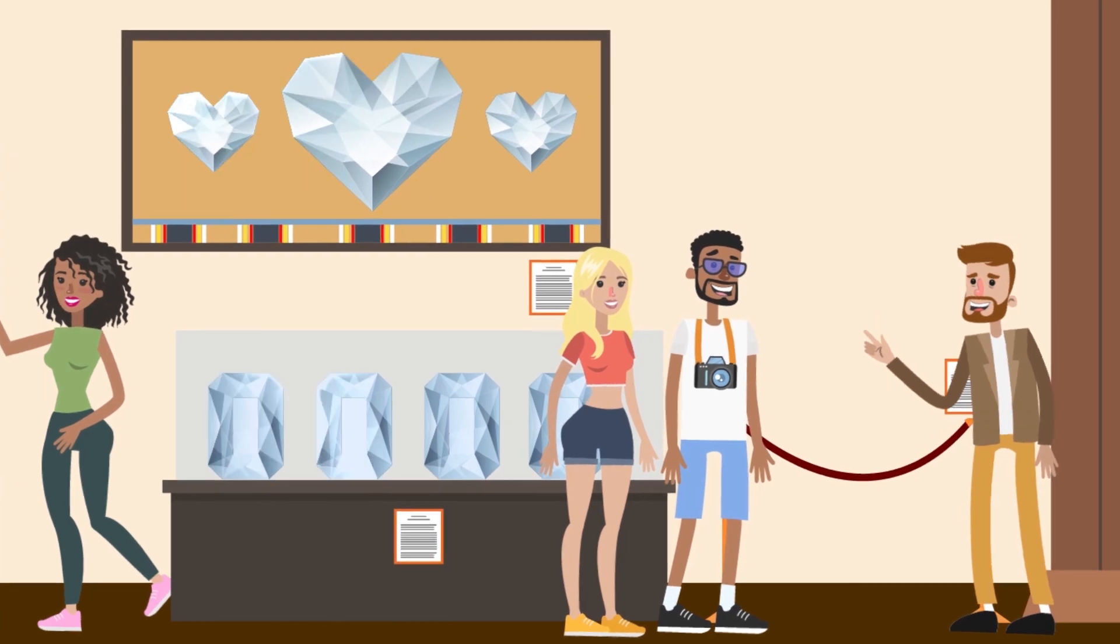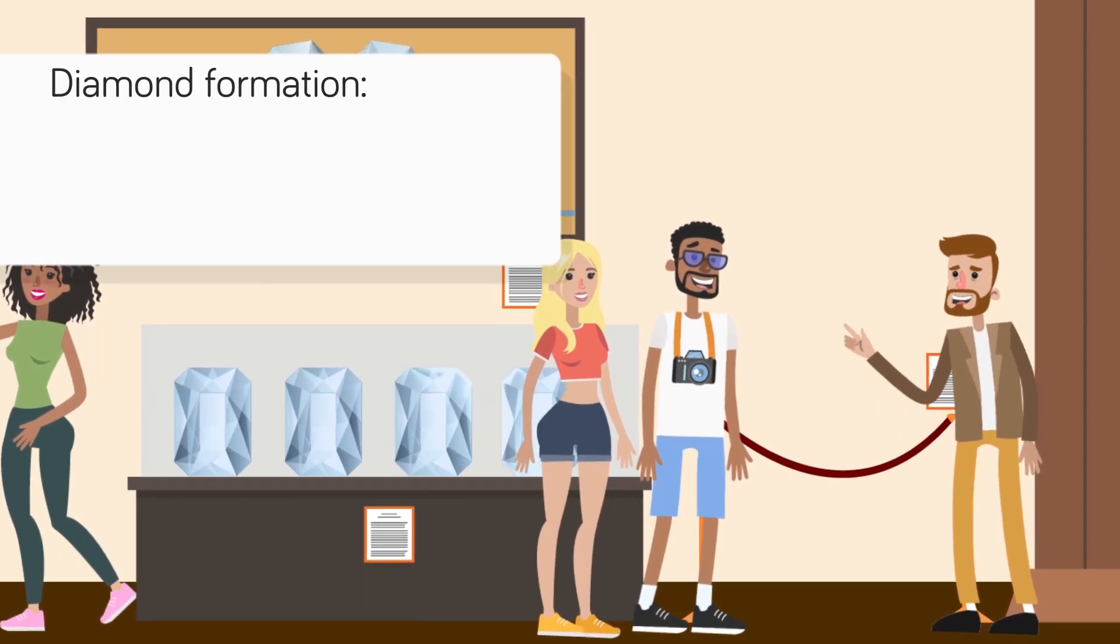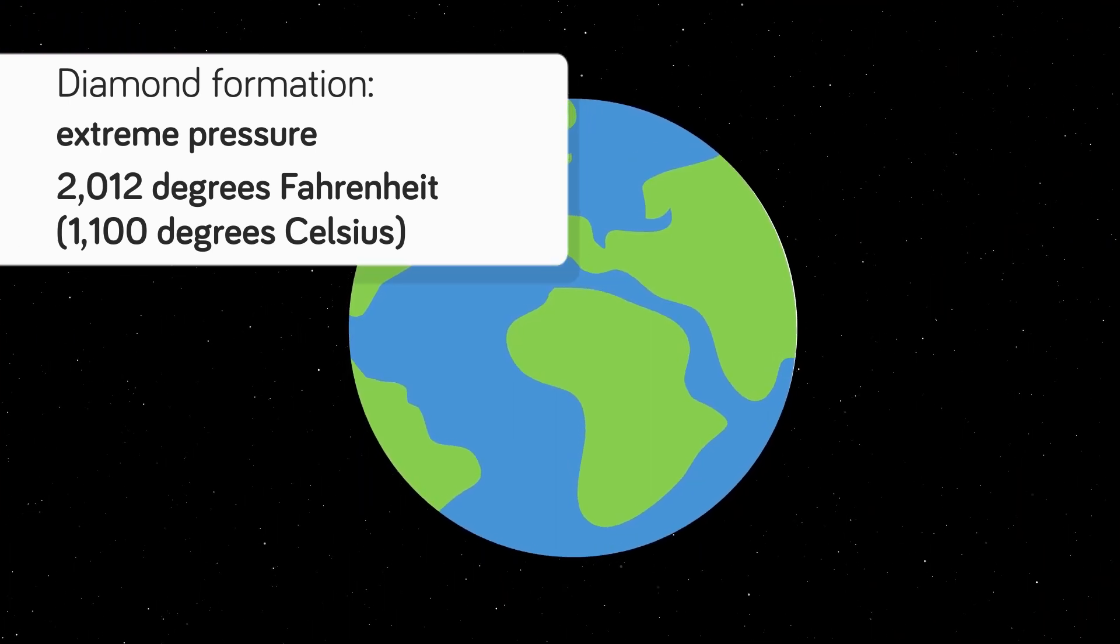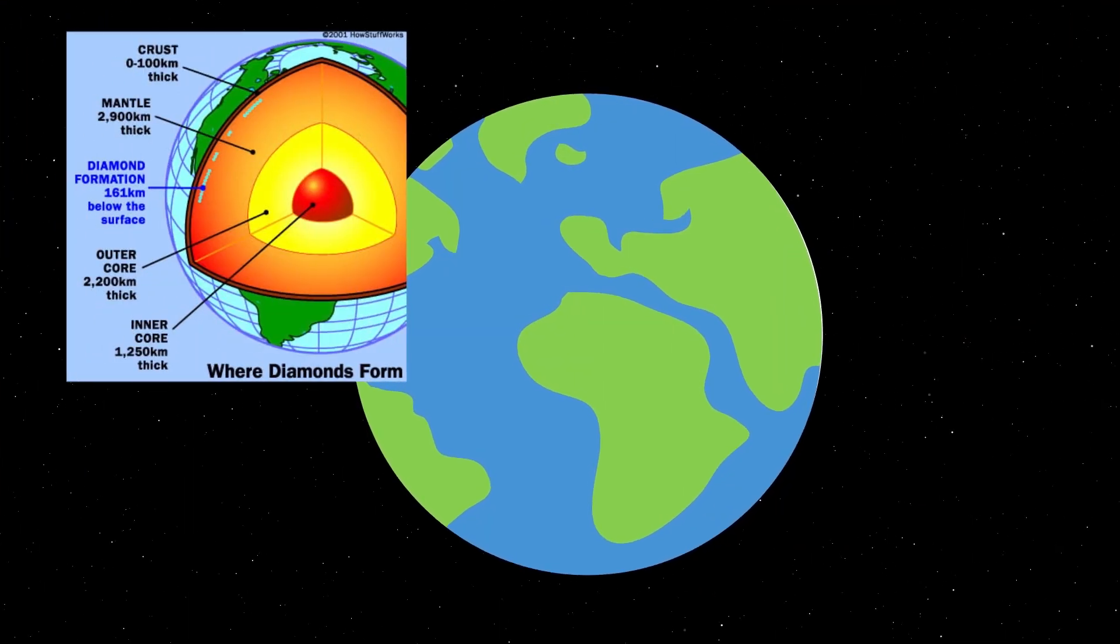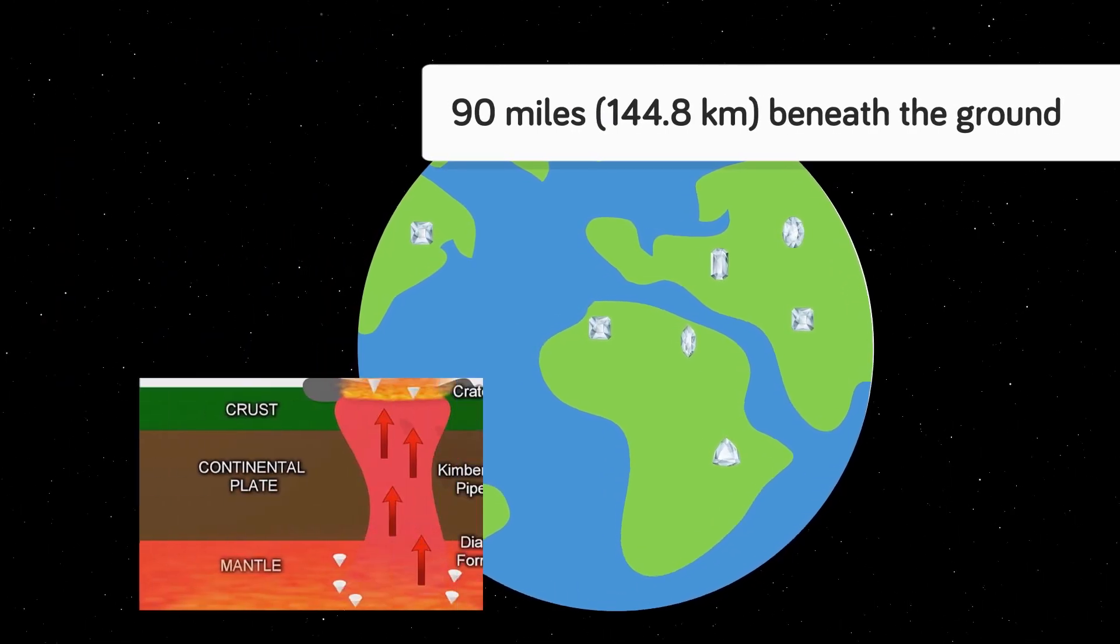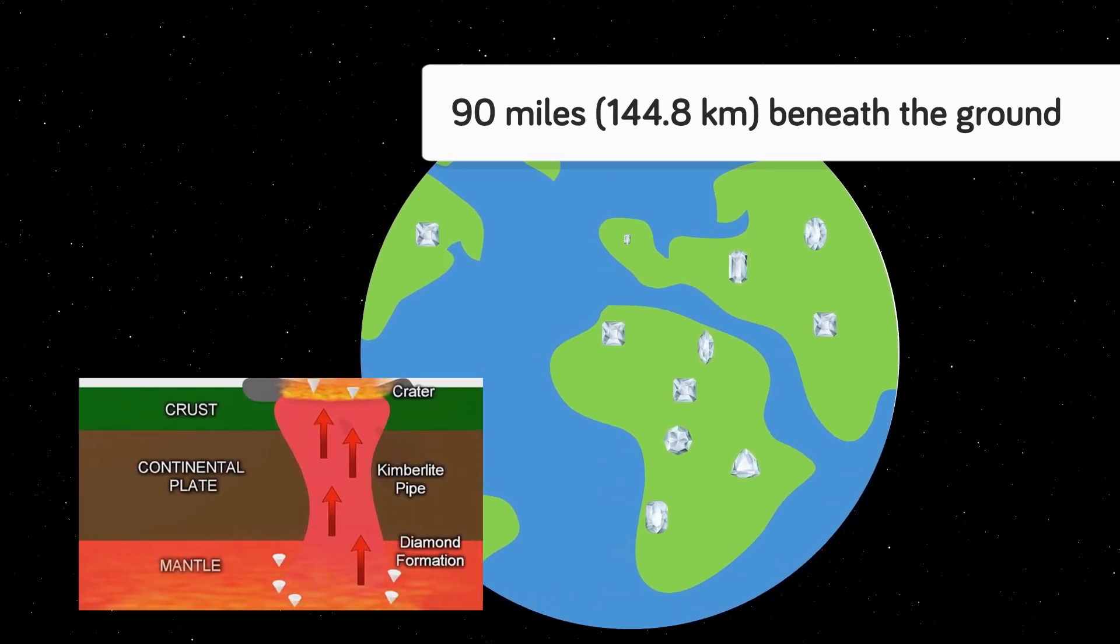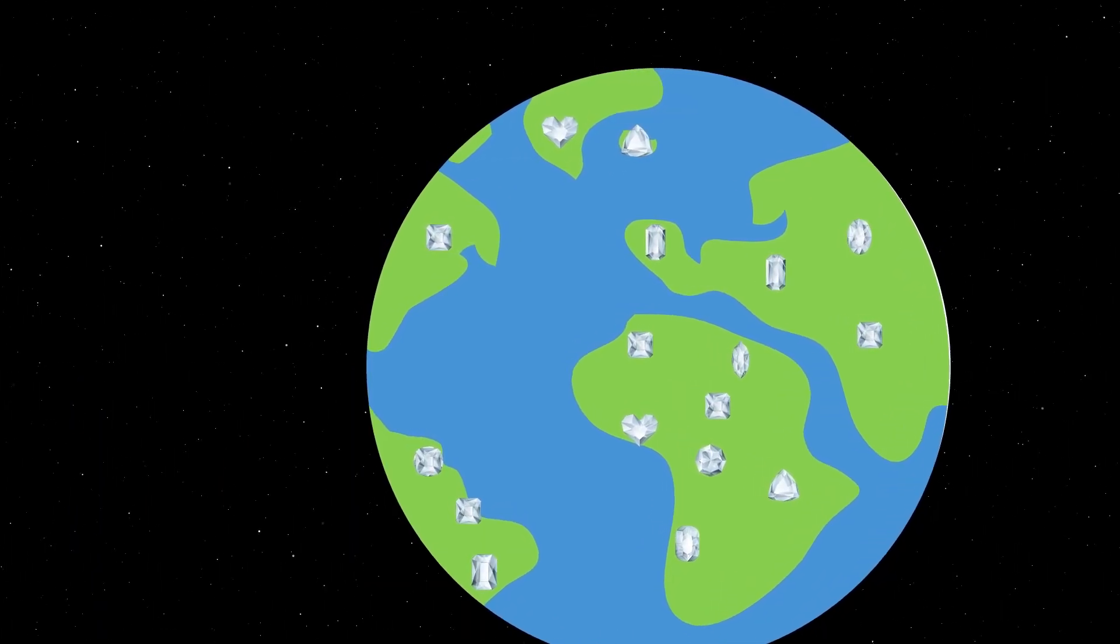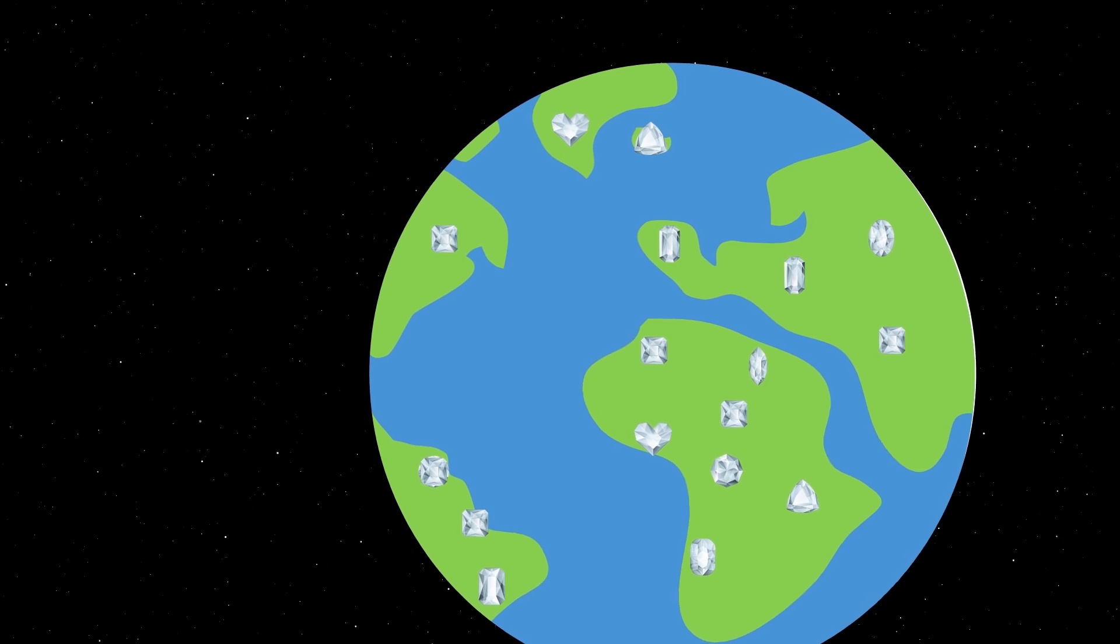Diamonds form deep within the earth's crust and are created by pressure and heat in the range of 2,012 degrees Fahrenheit. If the environment is too hot or too cold, the diamond won't form. They begin life as pure carbon around 90 miles beneath the ground, and most are over a billion years old by the time they surface. Some stones are over 3 billion years old, which is not that much younger than the earth itself.